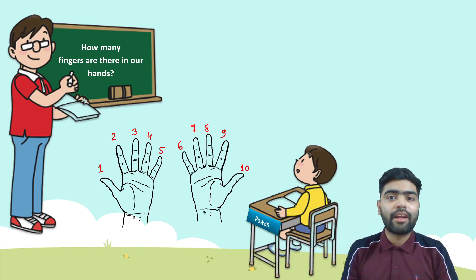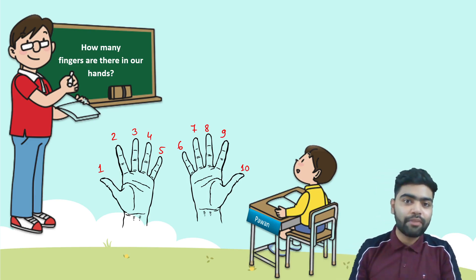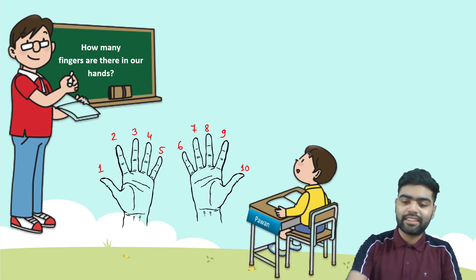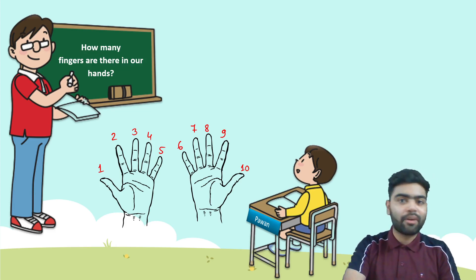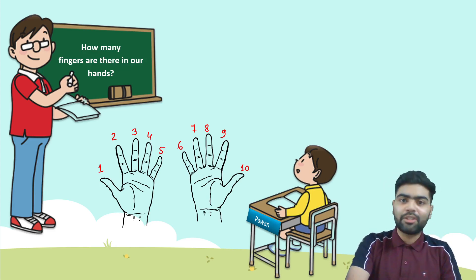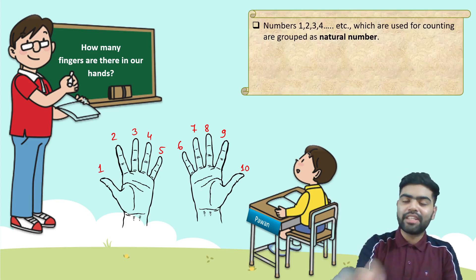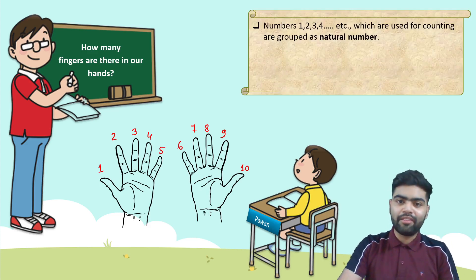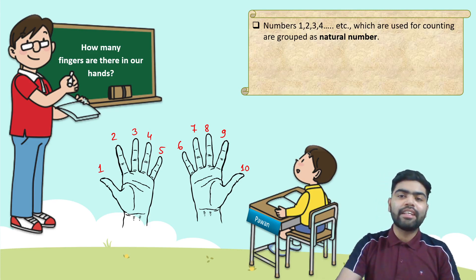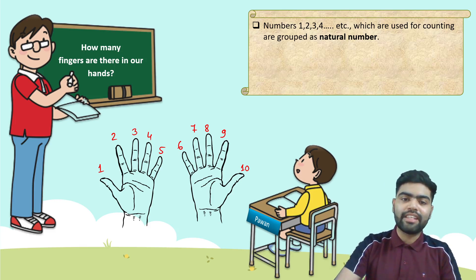Finger number six, seven, eight, nine and ten. So how many fingers are there? There are a total of 10 fingers in both of your hands. So these numbers that you see — one, two, three, four, and so on — which are used for counting, are grouped as natural numbers.